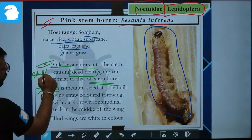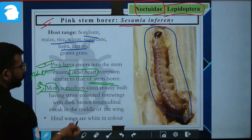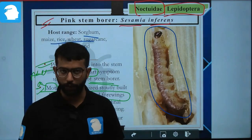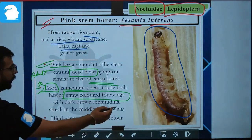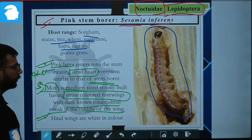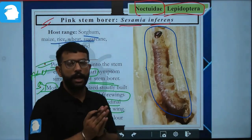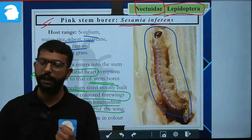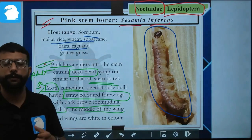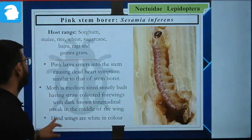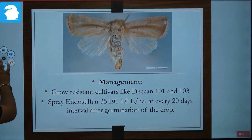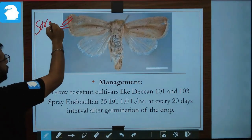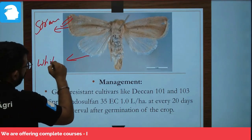The adult moth is medium-sized and sturdily built, having straw-colored forewings with dark brown longitudinal streaks in the middle of the wings. The hindwings are of white color. So the adult moth has straw-colored forewings with brown streaks and whitish hindwings.